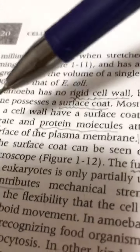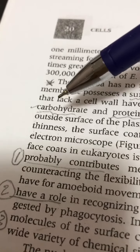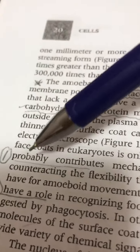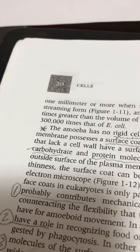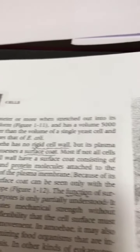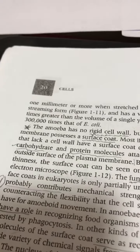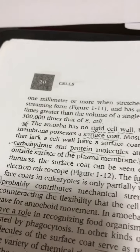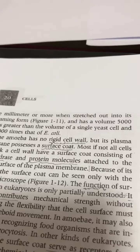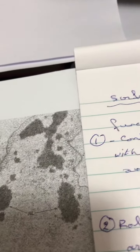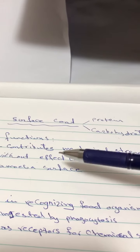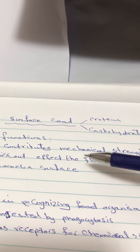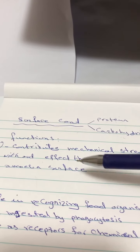What is the function of the surface coat? Surface coat has many functions. First of all, it contributes mechanical strength without affecting the flexibility of the cell. This means it provides mechanical strength but does not affect the flexibility of the amoeba.